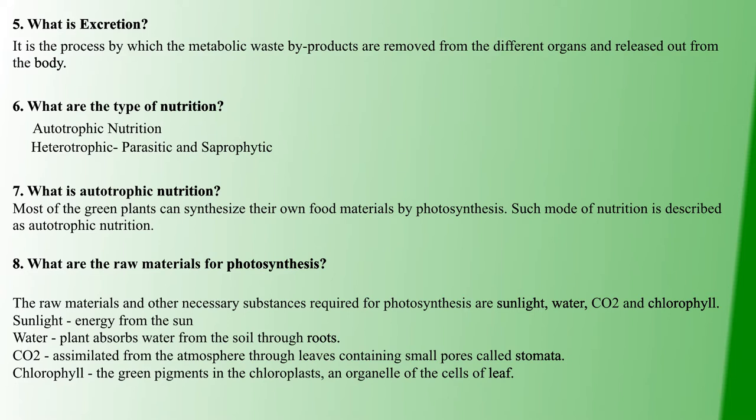Nutrition can be classified as autotrophic and heterotrophic. Autotrophic nutrition: green plants can synthesize their own food through photosynthesis. This is called autotrophic nutrition.